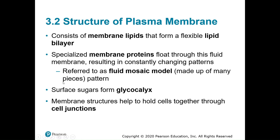The surface sugars form the glycocalyx, which we'll get into in more detail in a moment. We also have cell junctions — there are three different types of cell junctions that we'll be going into in detail.